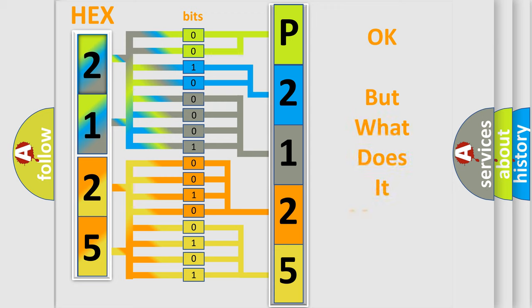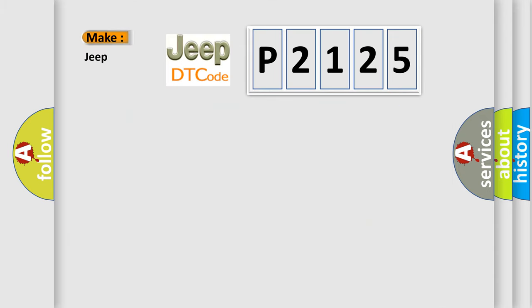The number itself does not make sense to us if we cannot assign information about it to what it actually expresses. So, what does the diagnostic trouble code P2125 interpret specifically for Jeep car manufacturers?